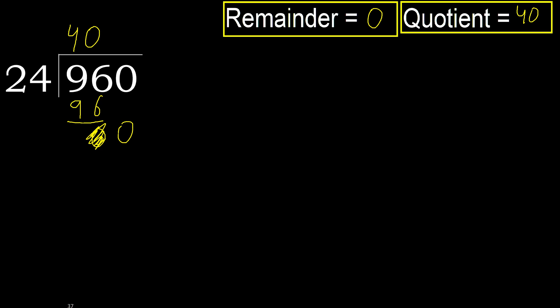960 divided by 24 is 40. Next: 1060 divided by 25.